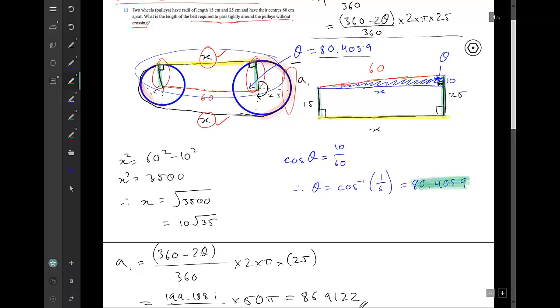Okay, so now I've got most of the stuff done. I've got this thing done, I've got my x's done, so the last thing left is this arc length here which we'll call a2. We're going to do the exact same way.